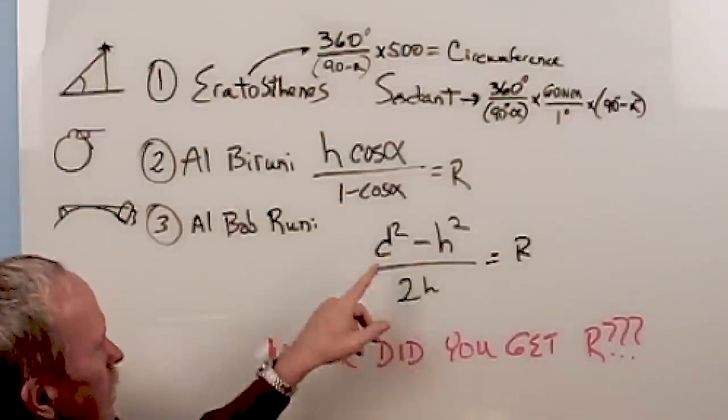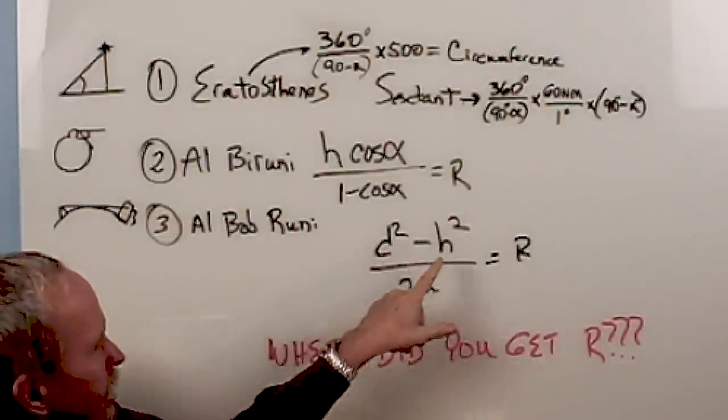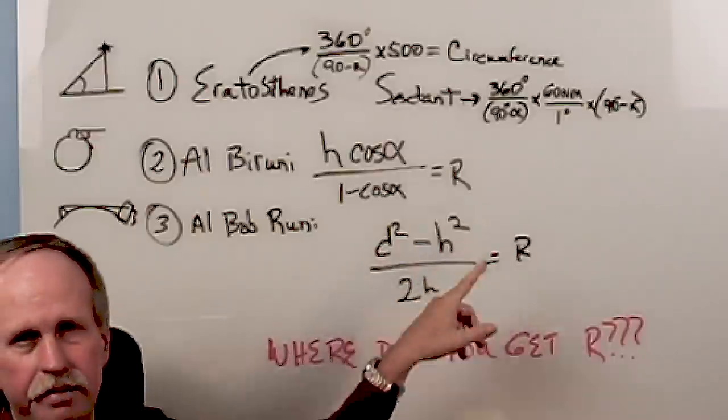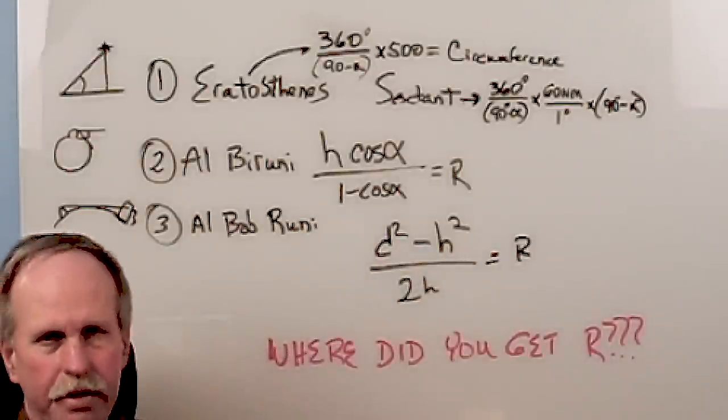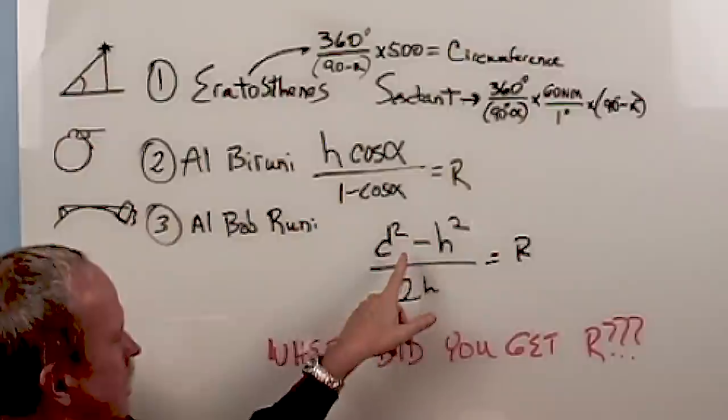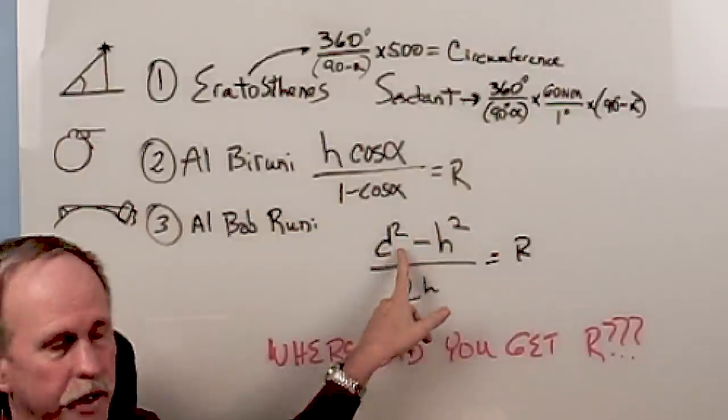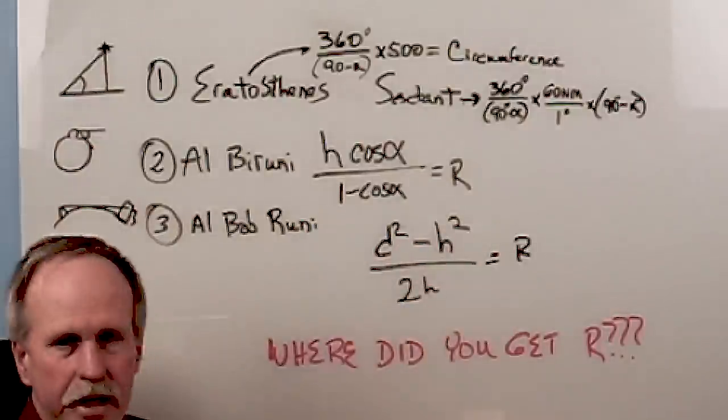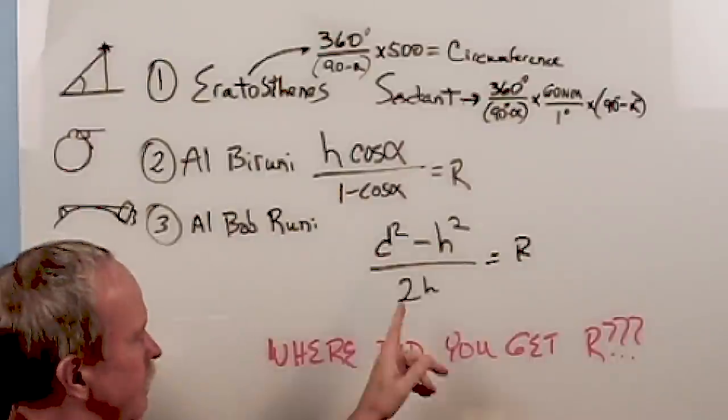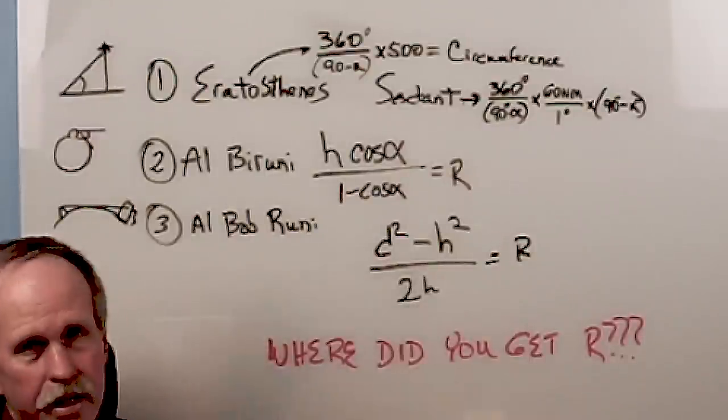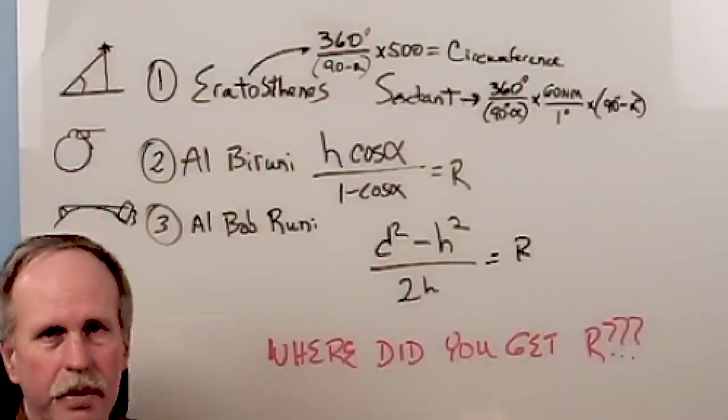Now, what I did with that was I looked at the distance to an object and the height of the object that was hidden from my view. And what I found was that if you took the distance and squared it, subtracted the hidden height squared, and divided it by 2 times the hidden height, you came up with the radius of the Earth.